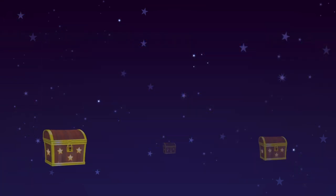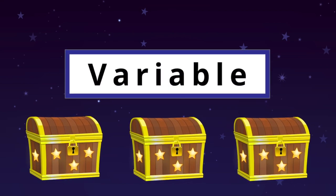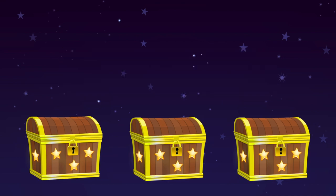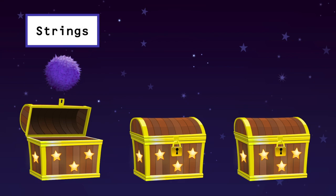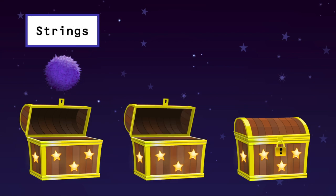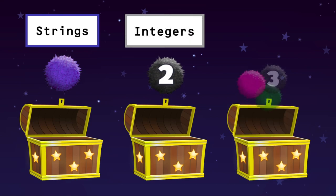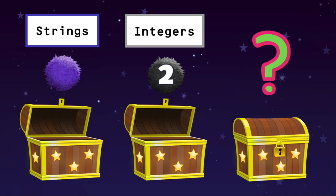Let's review. A variable is like a container that stores a single value that can change. Some variables store values made up of letters, like purple — these are called strings. Other variables can store a value that represents a whole number, like 2 — these are called integers. There's actually another mystery type of variable we use in Codable, but we'll keep that a secret until our next video.